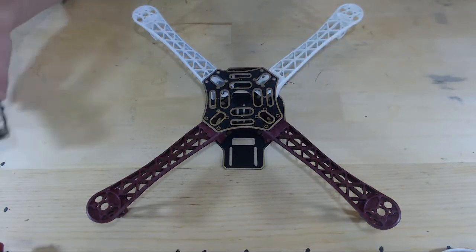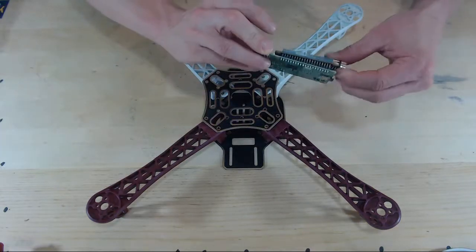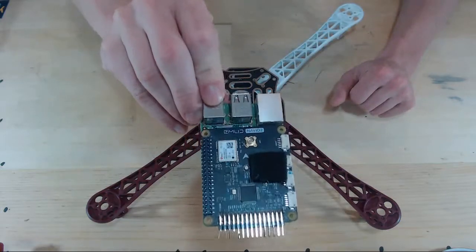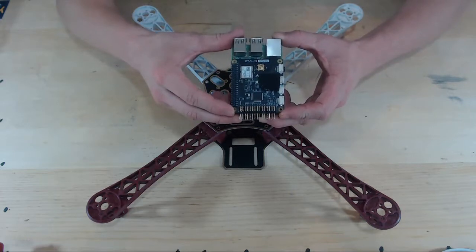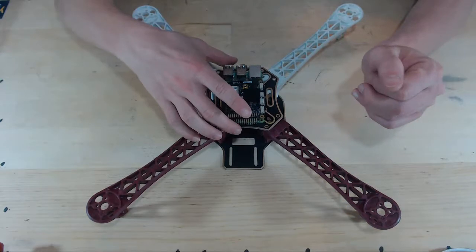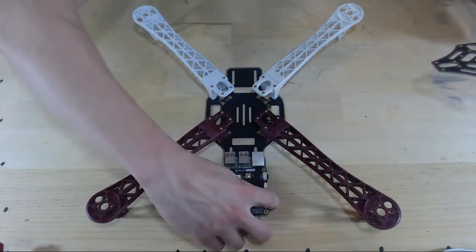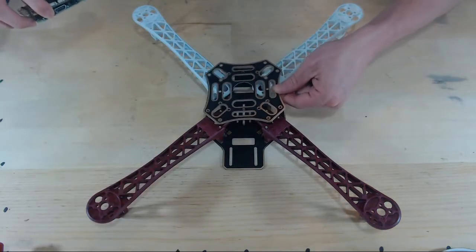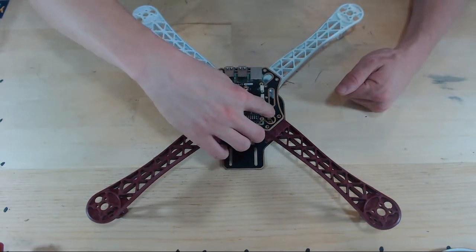Now the first thing we might want to start out with is where to place our flight controller. That is our Raspberry Pi and our Navio Shield. The two most popular places for the placement of the flight controller is either just right on top like that, or in the middle. But in this case the width of this Raspberry Pi is too wide to place the flight controller in the middle. So that fixes our decision to place the flight controller just on top like that.